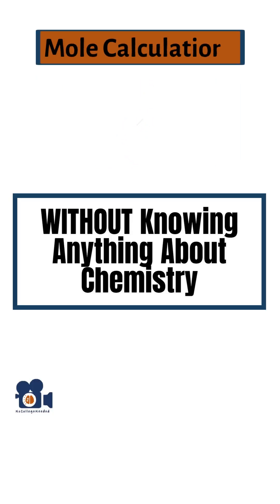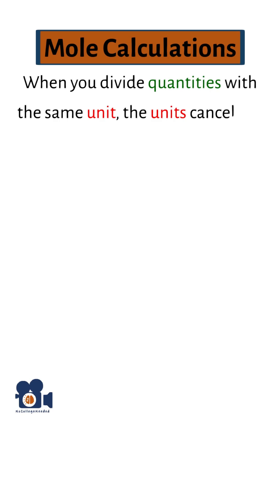The only thing you need to know is that when you divide quantities with the same unit, the units cancel out. For instance, dividing 10 meters by 2 meters equals 5.